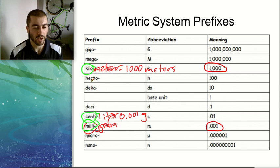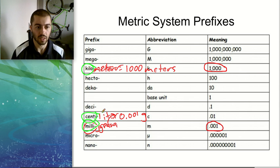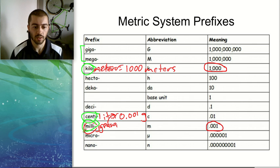It's also kind of the higher up you go in science, the more you need to use some of these other prefixes. Giga and mega are pretty common in physics. Micro and nano are really common in chemistry. But the ones that you definitely need to know this year that we're going to focus on are kilo, centi, and milli.